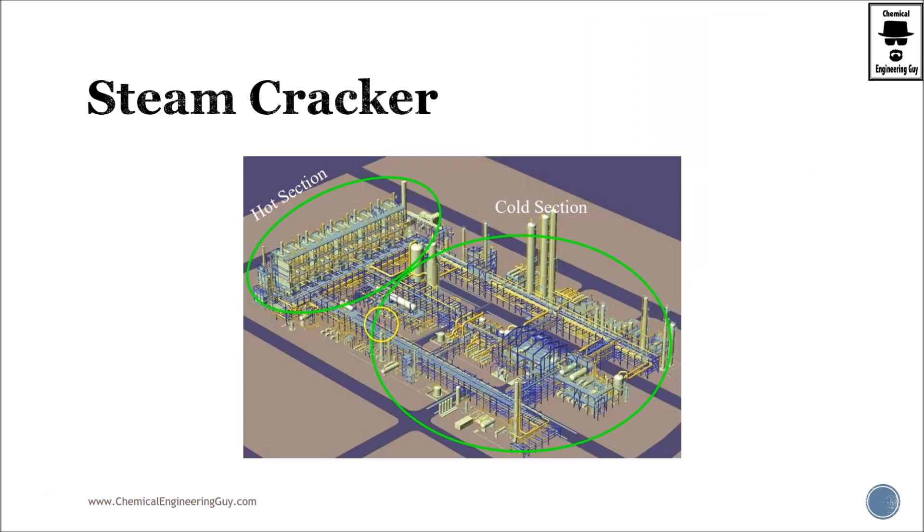Talking about the structure, we've got the hot section with furnaces—technically not furnaces but the reactors which are producing the olefins. Then you have the compression quenching, and this is the cold section. What you want is low temperature and plenty of distillation towers in order to remove the ethane, butane, propane, methane, and so on.